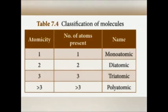Classification of molecules: if number of atoms present in a molecule is 1, it is a monoatomic molecule; if 2, it is a diatomic molecule; if 3, it is a triatomic molecule; if more than 3, it is a polyatomic molecule. For example, P₄ has 4 atoms — more than 3 — so it is a polyatomic molecule. Since all atoms are of similar kind, it is a homopolyatomic molecule.